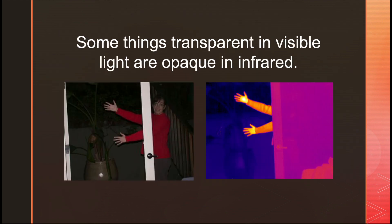Some things that are transparent in visible light are totally opaque in the infrared. This is a set of French doors — one closed, one open — and the infrared cannot see through the glass at all. This is why when you park your car in the sun in summer you have to drive with two fingers on the steering wheel: sunlight gets through the windows, heats up the inside of the car, but the infrared can't get out.